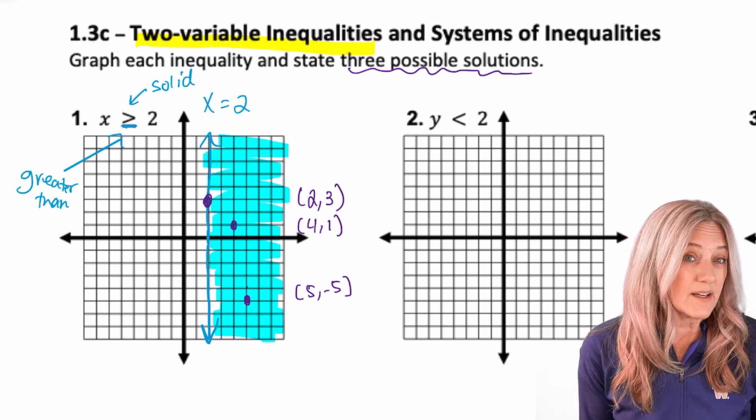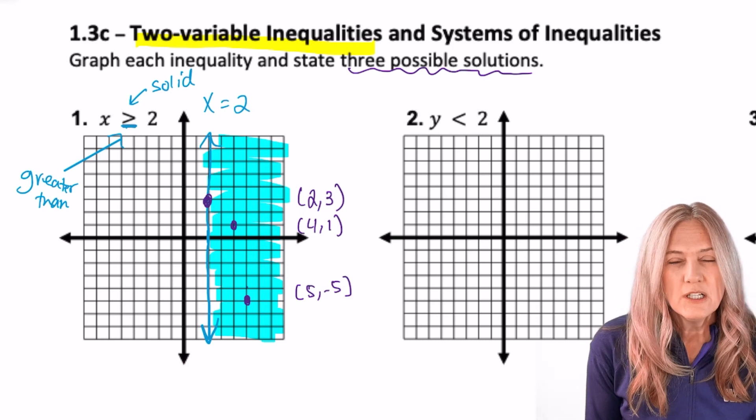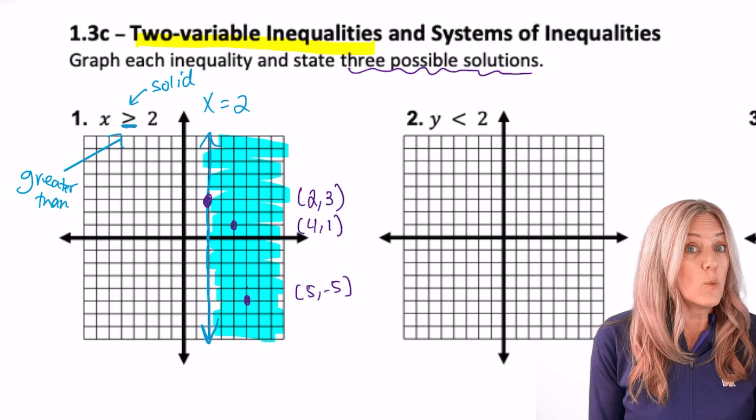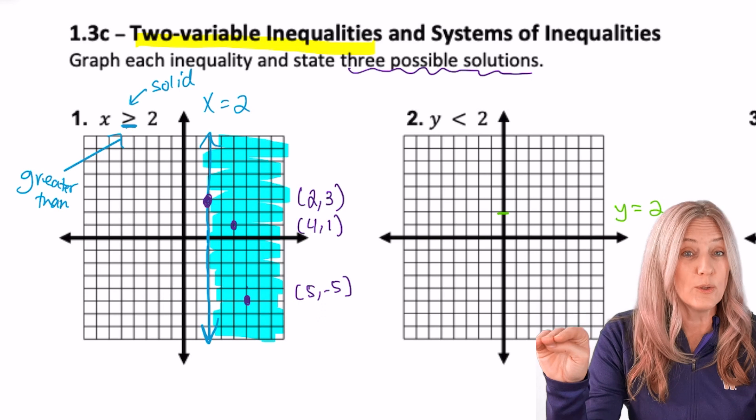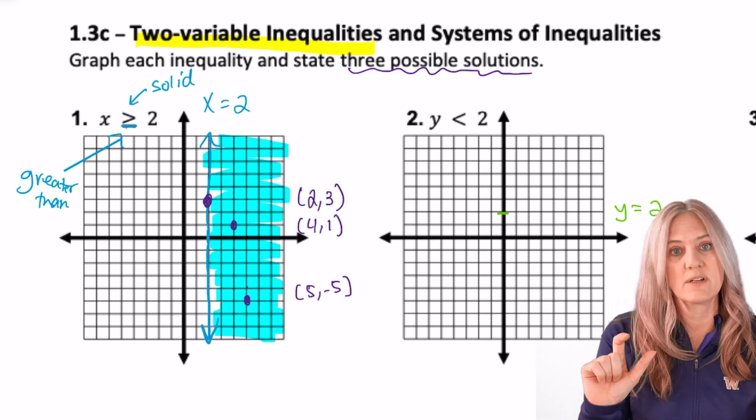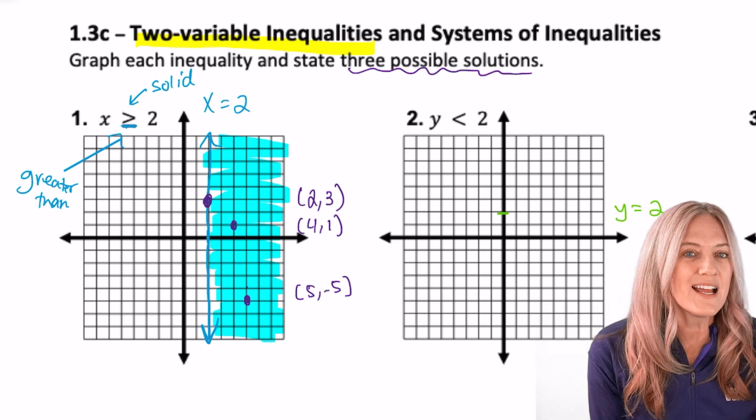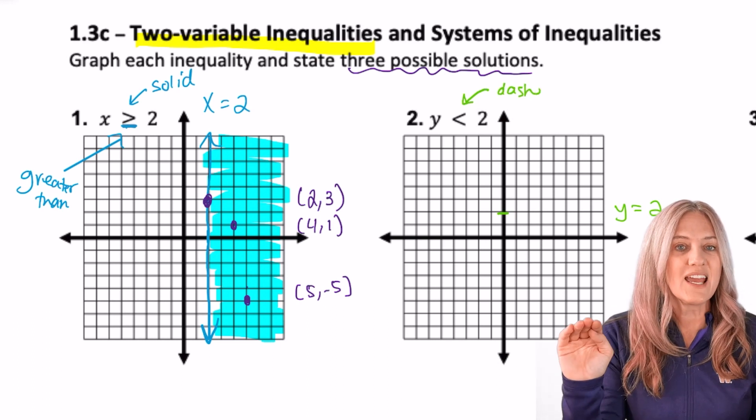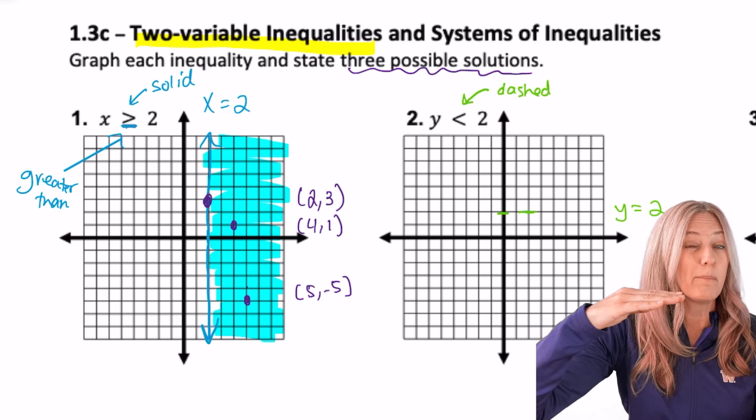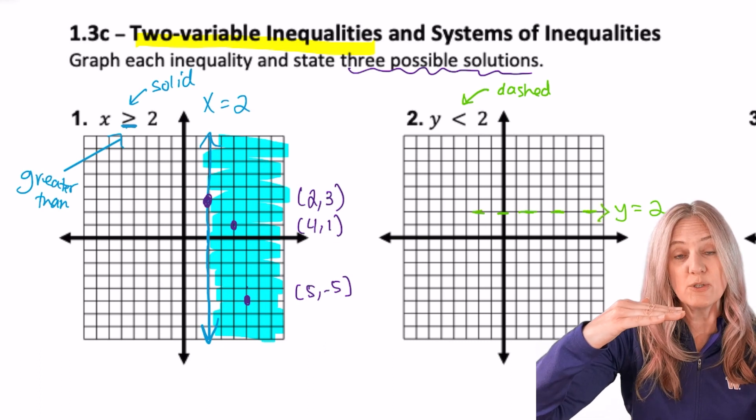Now we have the inequality y less than 2. So we're still going to graph the line y equals 2, which means it will be that horizontal line through 2, where all of the y coordinates are 2. But this time, because it's not equal to, we have to make it dashed, indicating that it is a divider, but no point on that specific line is a solution.